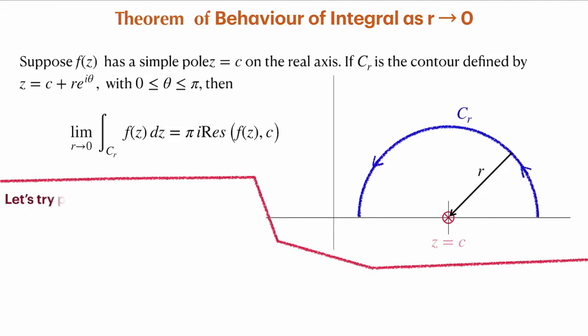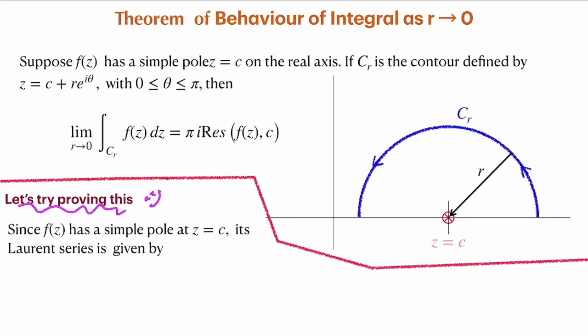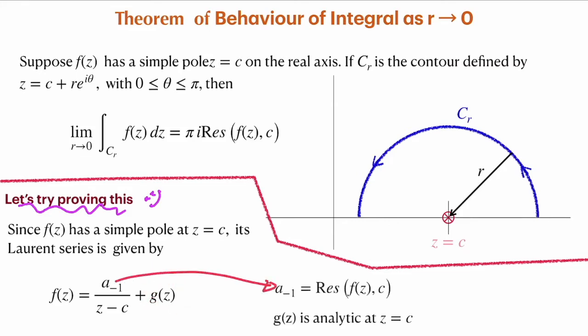Let us try to prove this. Since f(z) has a simple pole at z = c, its Laurent series can be expressed as f(z) = a_{-1}/(z − c) + g(z), where a_{-1} is the residue of f(z) at z = c, and g(z) is an analytic function at z = c. With the convention of the Laurent series, if the function has only a simple pole, there are no negative powers higher than −1. So the series terminates at z^{-1}, that is a_{-1}/(z − c) + g(z).